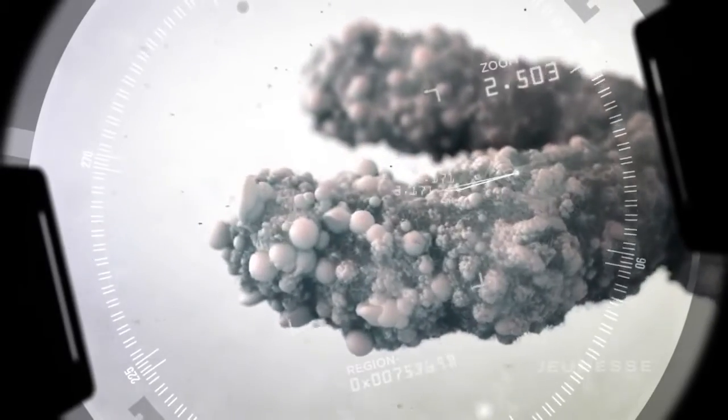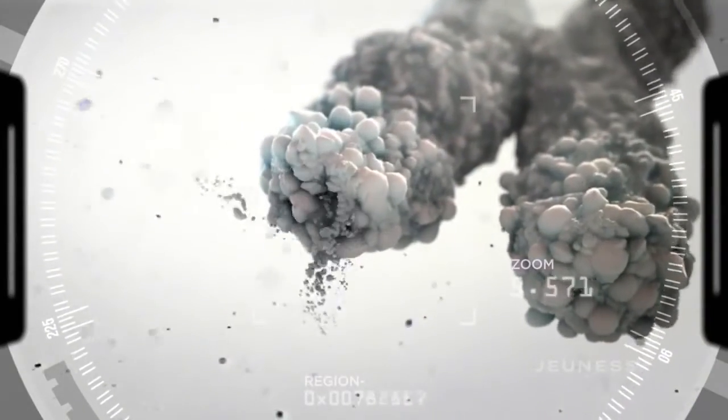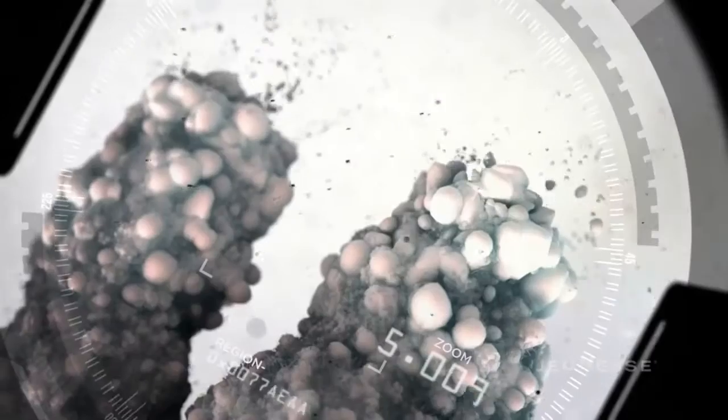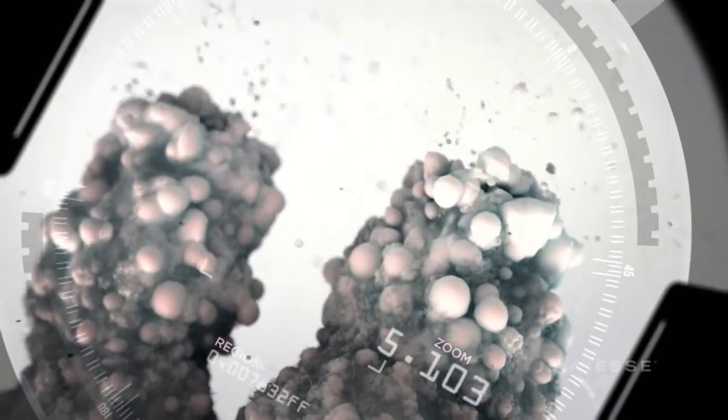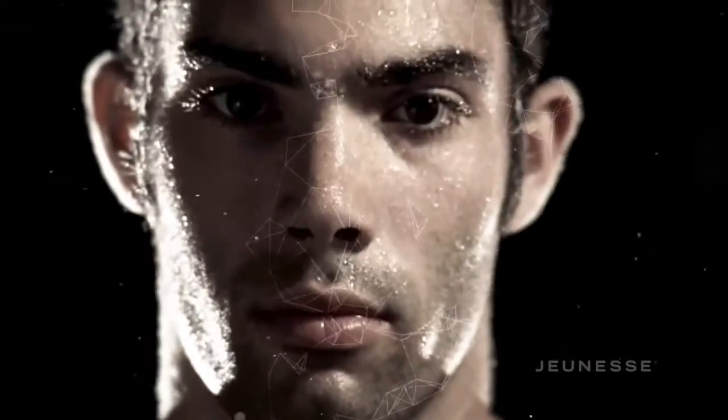When we are born, our telomeres are long, but as time goes on, they begin to shorten. So short, in fact, that our telomeres fray, similar to the end of a shoelace. And our journey called cellular aging begins.